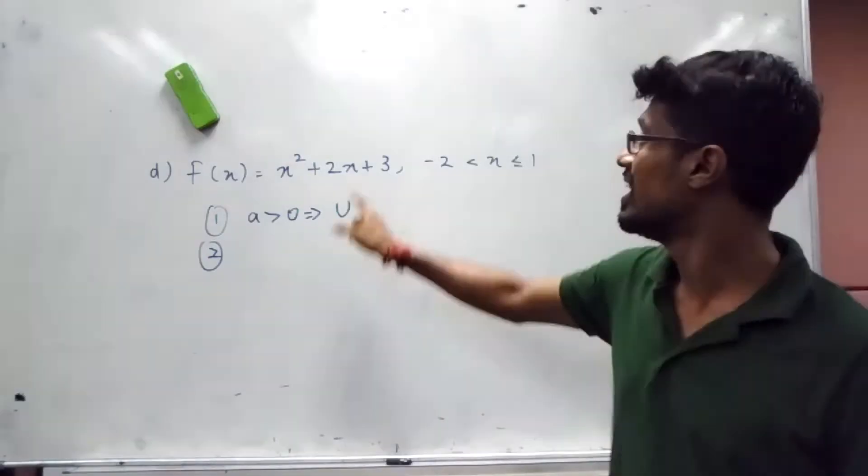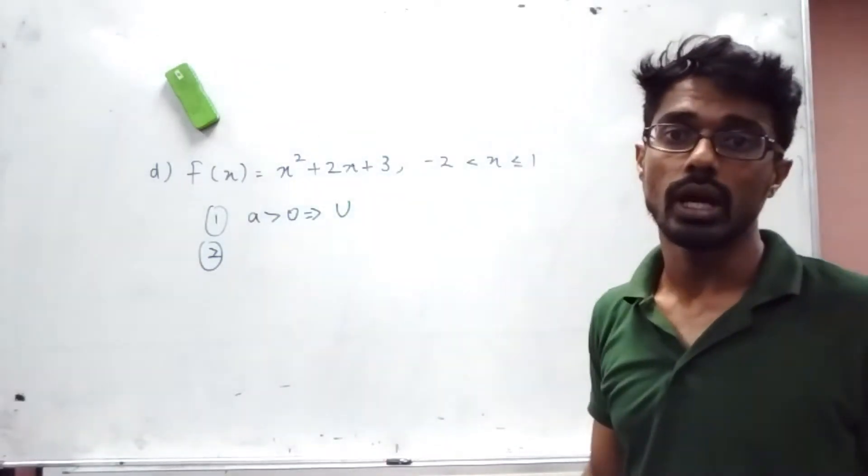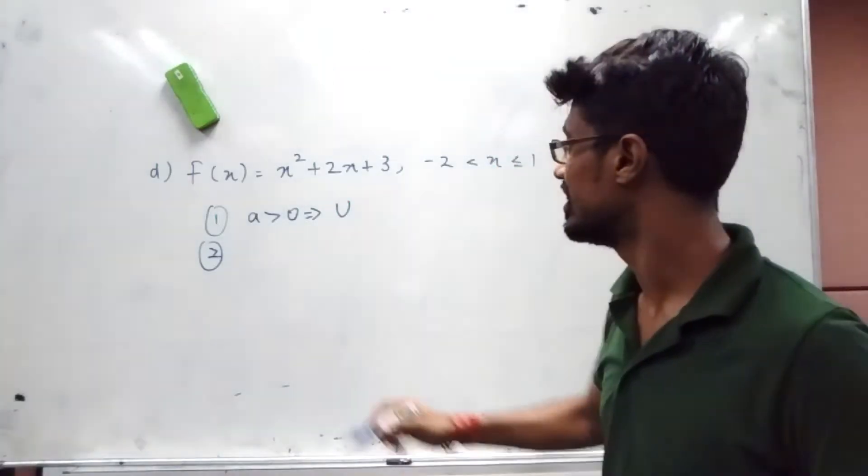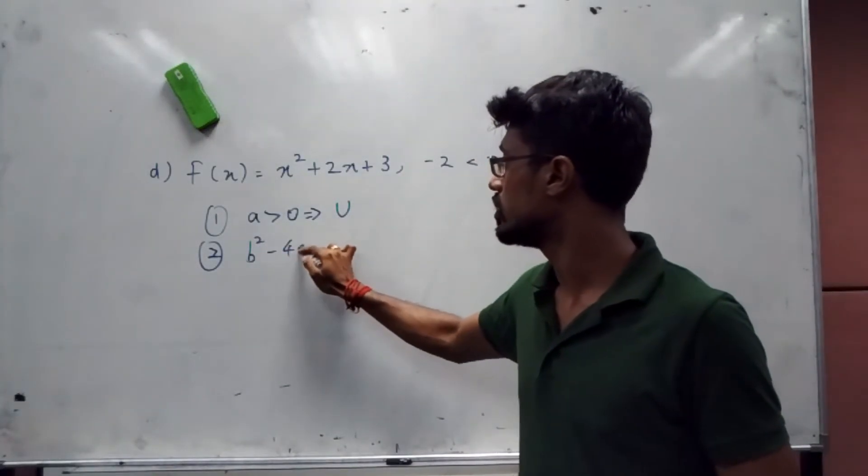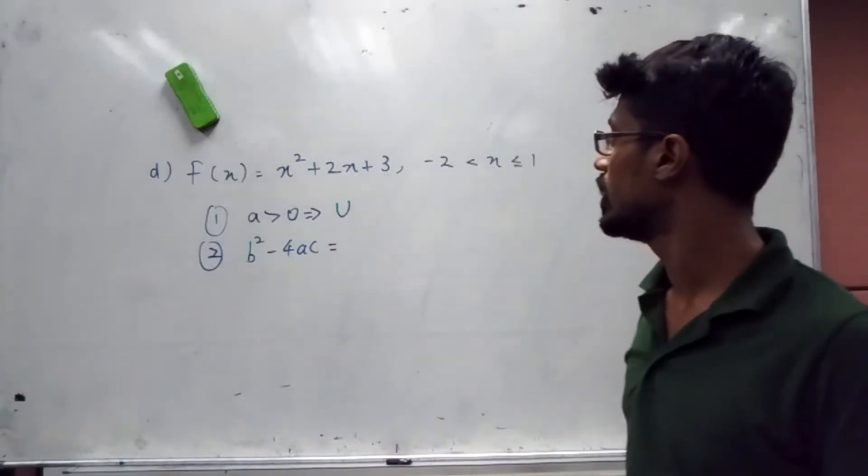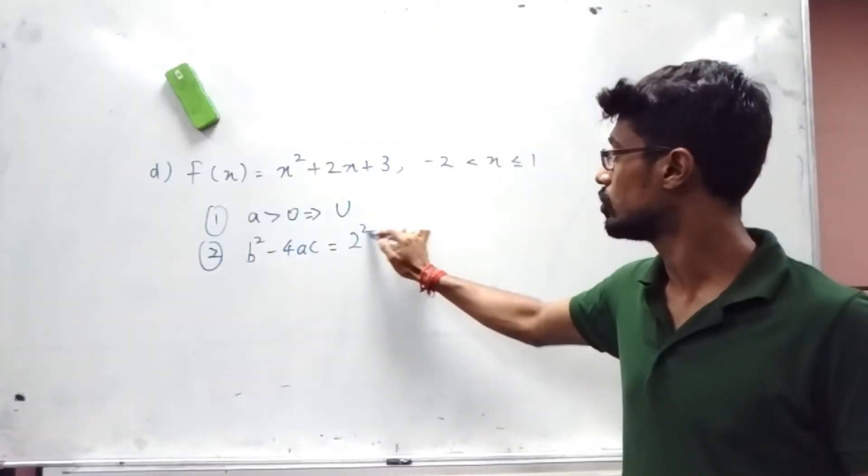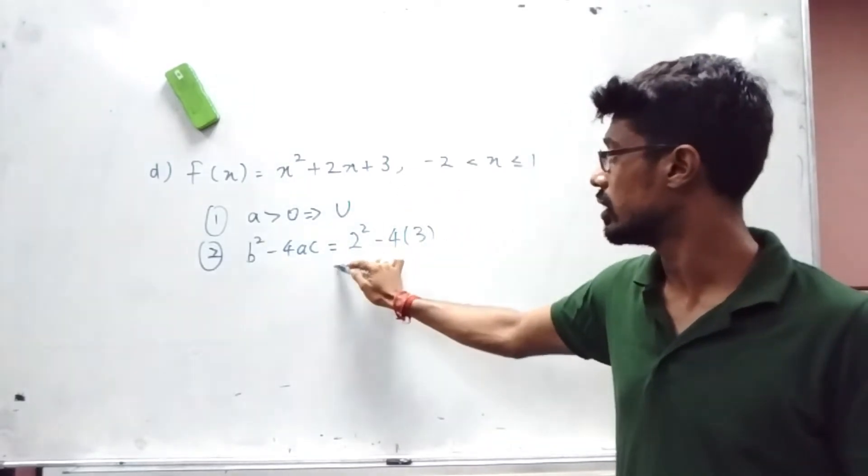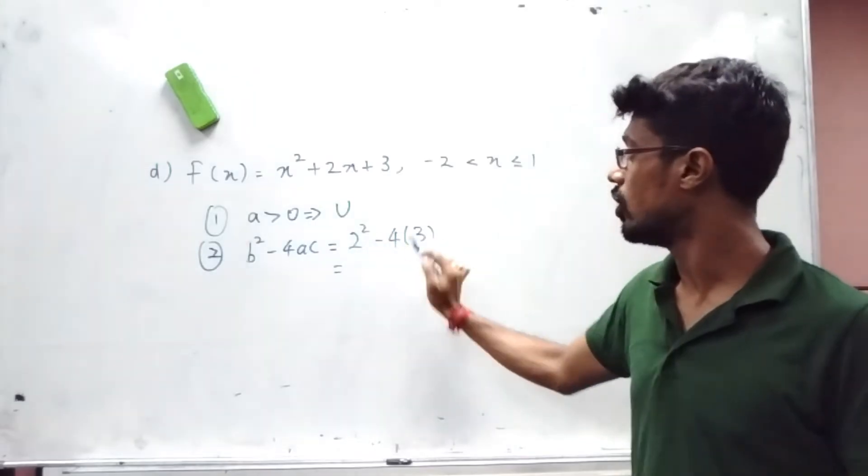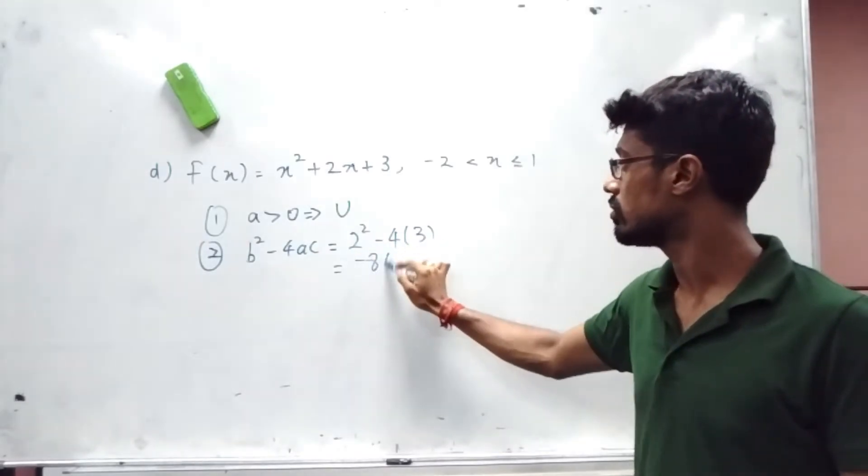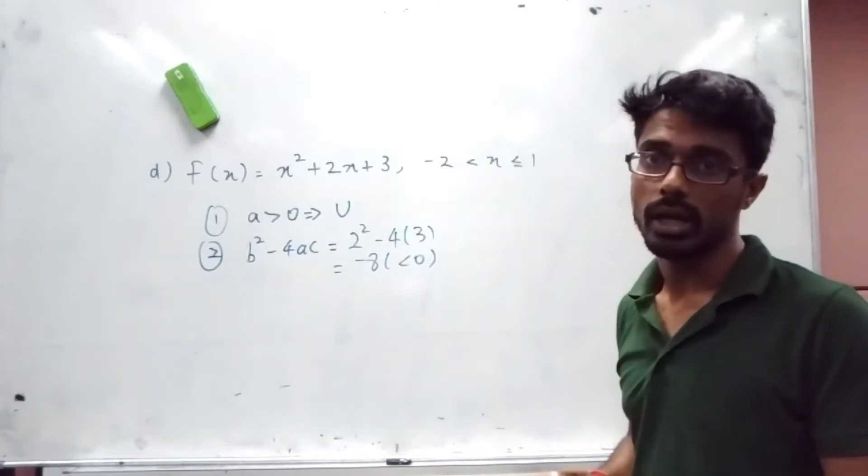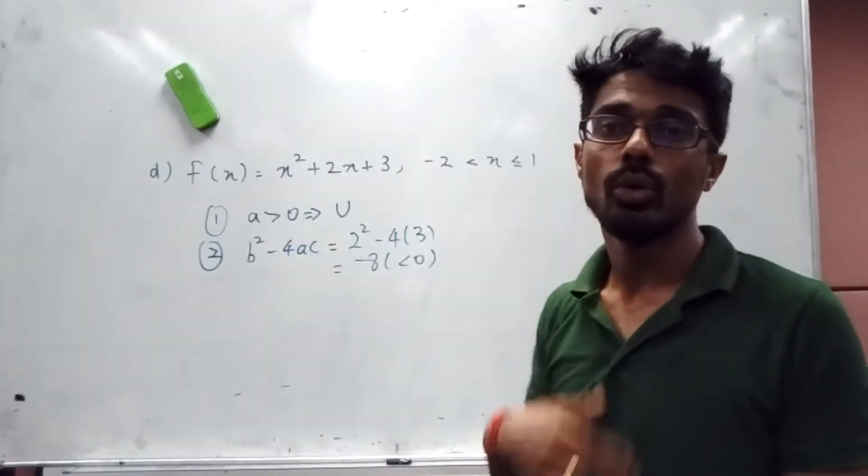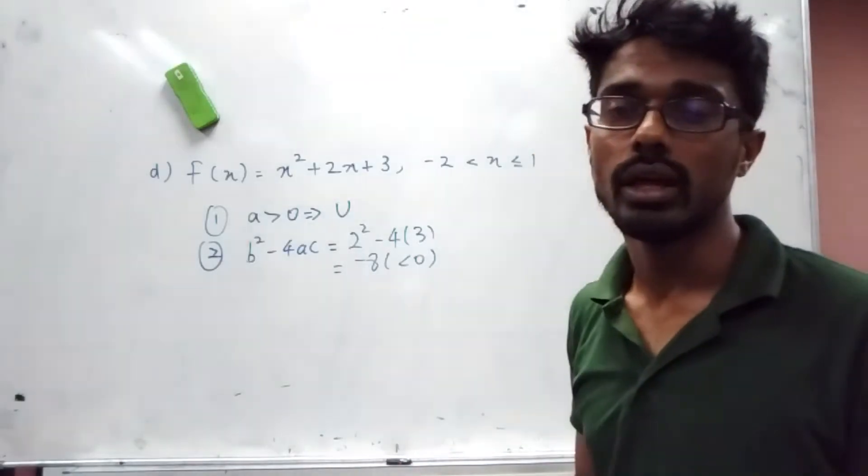Number two, it's good to see whether our graph is going to cut the x-axis or not. For this purpose, we calculate the value of b² - 4ac. Here our value of b is 2, so 2² - 4 times a is 1, c is 3. This is going to be 4 - 12, so negative 8, which is less than 0, meaning no root. It's not going to cut the x-axis, so we don't have to find the x-intercept.